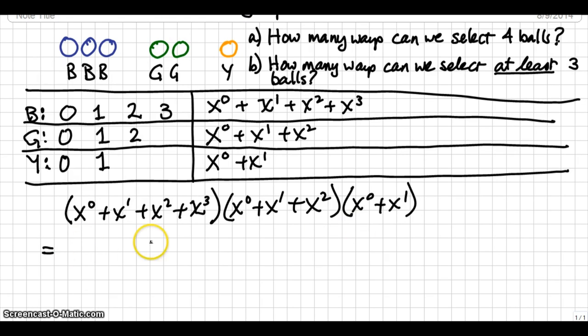So, for the first term, we'll just write the binomial part down, the one for yellow. That's 1 plus x. The options for green will say 1 plus x plus x squared. For the blue, 1 plus x plus x squared plus x cubed. Alright.